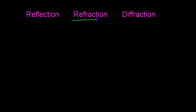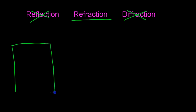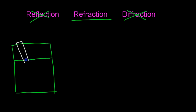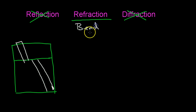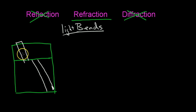Next we will talk about refraction. Refraction is something else that you've seen. Let's say we have a glass of water — here's the water line — and then we have a pencil coming through here. It hits the surface of the water, and then we see it from the side at a different place. That's because the light refracted — it bent. It's when light bends, and the bending of the light causes us to see the object in a different place.